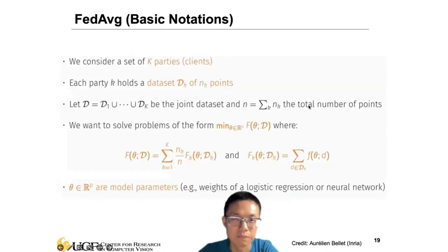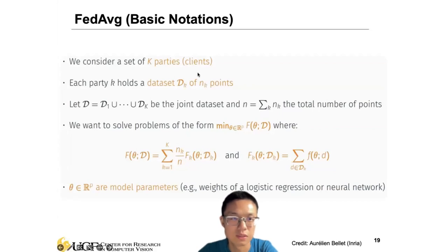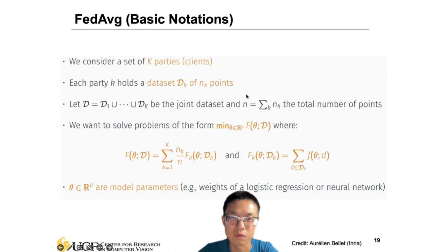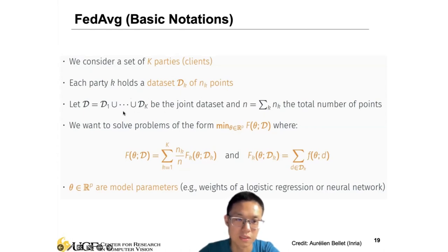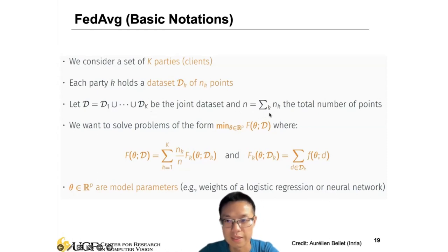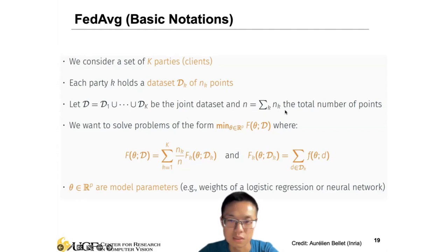Here are some of the basic notations. First, we consider a set of K parties or clients. Each party holds a dataset, denoted as D_k, and each dataset has n_k data points. In total, if we do this in the centralized way, we have a joint dataset D_1 to D_k, and n is the total number of samples.